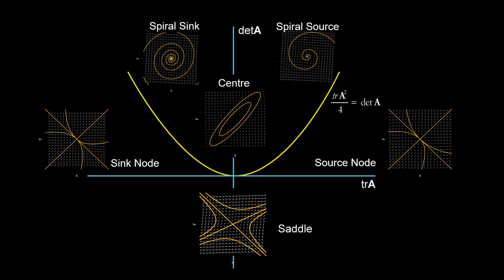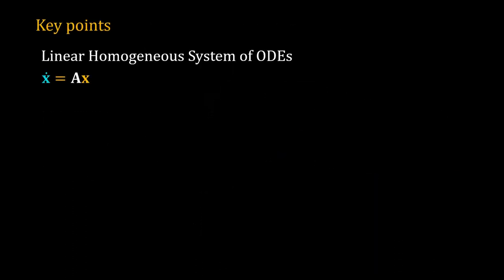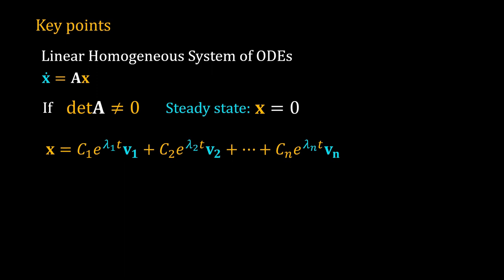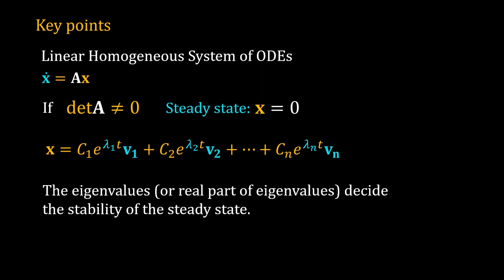With this video we end our discussion on linear systems and move to non-linear systems. Let me summarize what we have learned about a linear homogeneous system of ODEs for any number of dependent variables. If the determinant of the coefficient matrix is not equal to zero, then the steady state is unique, and at the steady state all dependent variables are zero. The generalized solution is defined in terms of eigenvalues and eigenvectors of the coefficient matrix. Finally, the signs of the eigenvalues — or if complex, the real part of the eigenvalues — determine the stability of the steady state. When those are negative, the steady state is stable.